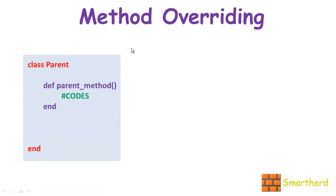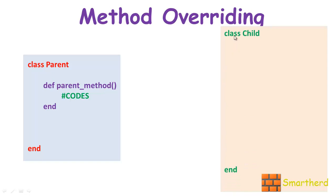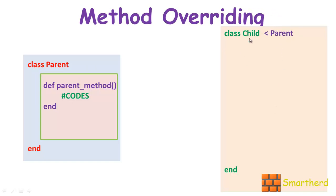Now suppose we have a class Parent like this, and within this we have a function parent_method with some code. Now we have another class Child with an end keyword. Now if we want this block of method to be inherited in the child class, then we have to inherit the parent class into the child — very easy, very simple.